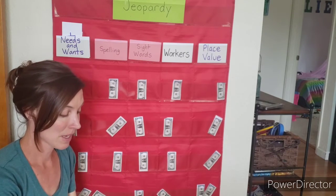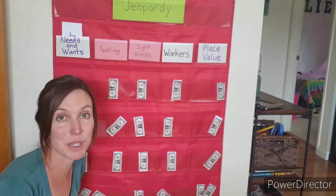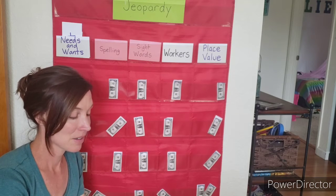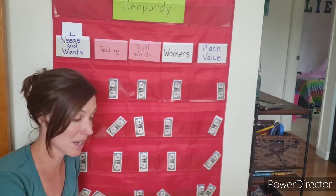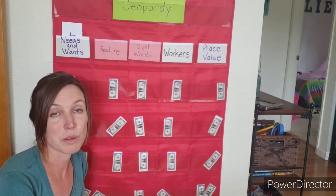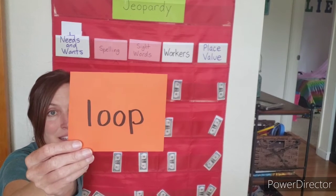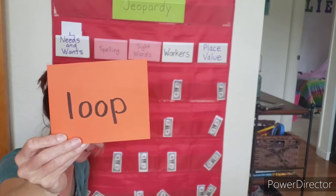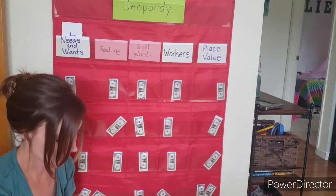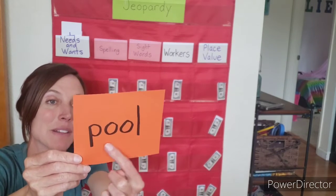Now we're going to do some spelling. These words have 'oo' in them and 'ew' — those were the two spelling skills we were focusing on this week. I'm going to show you the word, I want you to try to read it, and then think of which spelling set is in there. Ready? Loop — good! This word has 'oo' in it. This is kind of like loop but switched around — what word is this? Pool. This one also has 'oo'.